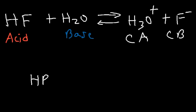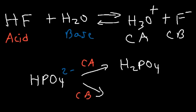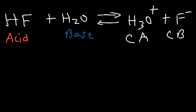Now what is the conjugate acid and base of monohydrogen phosphate, HPO4²⁻? To write the conjugate acid, increase the hydrogen number by one to get H2PO4 and increase the charge by one: −2 + 1 = −1, giving H2PO4⁻. For the conjugate base, remove a hydrogen to get PO4 and decrease the charge by one: −2 − 1 = −3, giving PO4³⁻. That's how you write the conjugate acid and base of any molecule or ion.